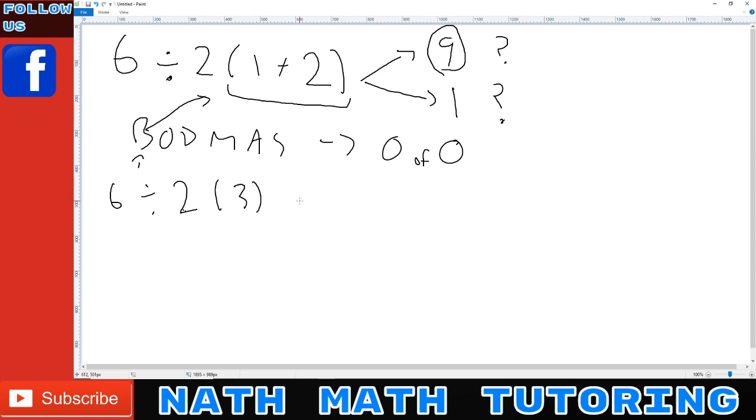Now it's this next step that most people will get wrong. They will do 2 times 3 first, before dividing by 6.